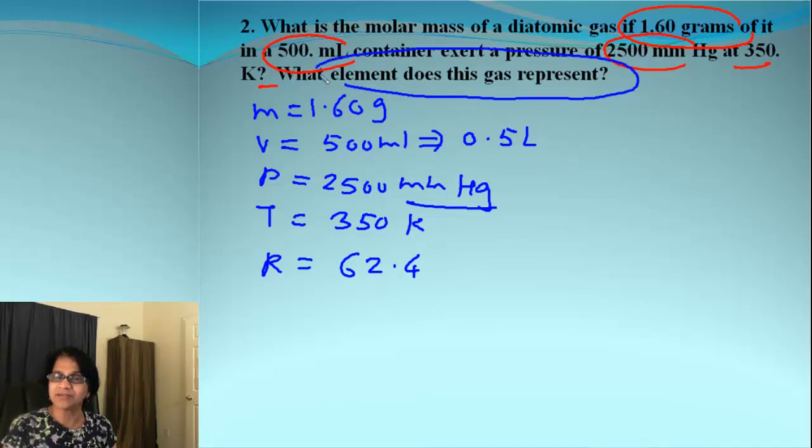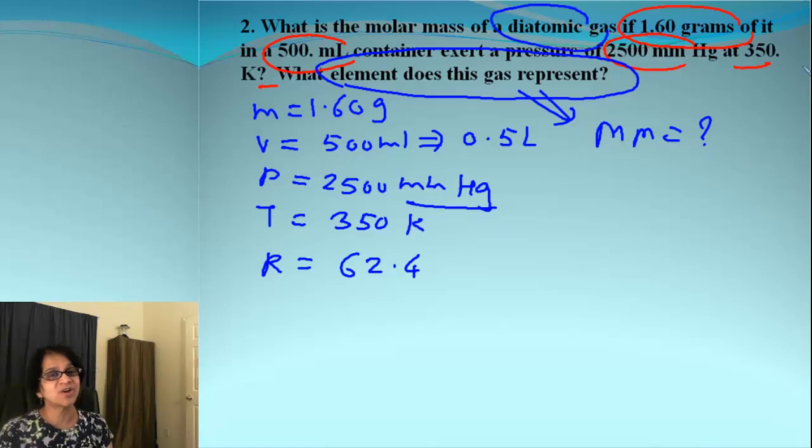What are we looking for? We need to find out the unknown element. And how do we get that? If we know the molar mass, we will be able to figure out which element we have. And also look carefully. That's a diatomic gas. That means the molar mass will be for 2 atoms. So whatever molar mass you get, you need to make sure you convert that to the mass of 1 atom.